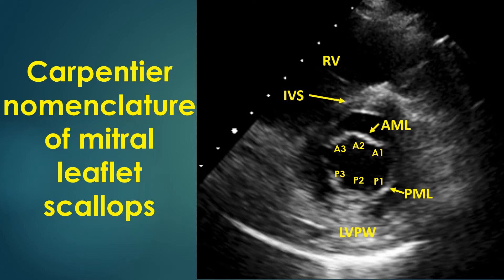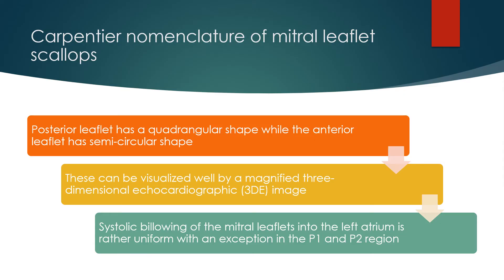Two indentations and three scallops of the posterior mitral leaflet are seen. The posterior leaflet has a quadrangular shape while the anterior leaflet has a semicircular shape. These can be visualized well by a magnified three-dimensional echocardiographic image.